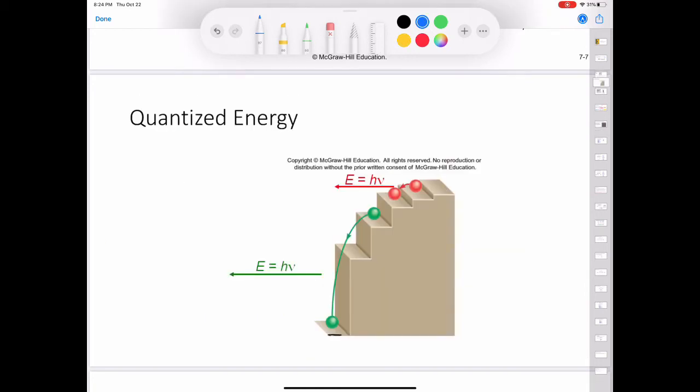Bohr's theory enables us to explain the line spectrum of the hydrogen atom. Radiant energy absorbed by the atom causes the electron to move from a lower energy state, characterized by a smaller n value, to a higher energy state, characterized by a larger n value. Conversely, radiant energy, in the form of a photon, is emitted when an electron moves from a higher energy state to a lower energy state.